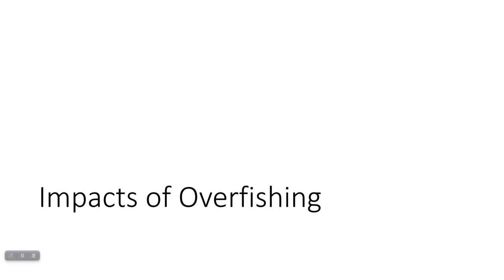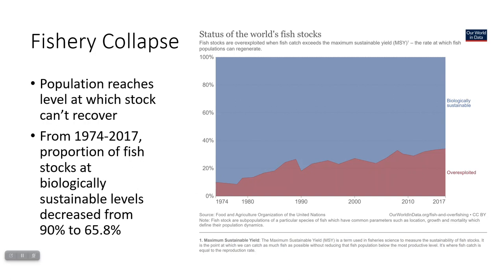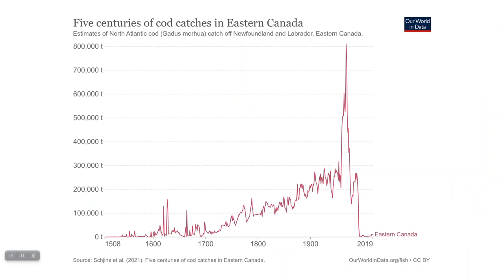The biggest impact of overfishing is fishery collapse — when the population reaches a level at which the fish stock just can't recover. We've caught too many fish, not enough remain to sustain the population, and it crashes. From 1974 to 2017, the proportion of fish stocks that were biologically sustainable decreased from about 90 percent to less than 70 percent, with an increasing proportion over-exploited or fully collapsed.